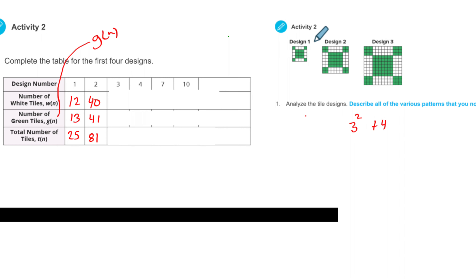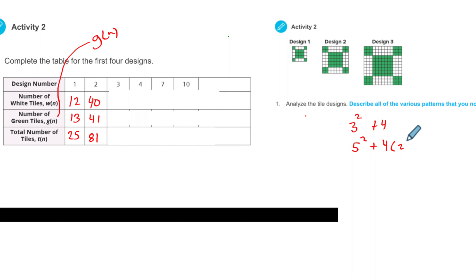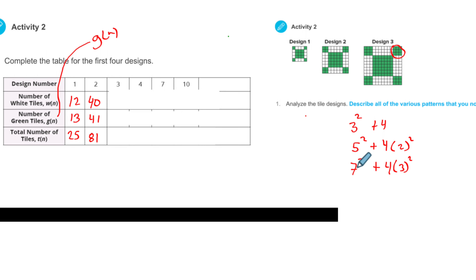Now I go to the next design looking for a pattern. From 3, it goes up to 5. So I have the center part which is 5 squared. Then I add these corner pieces — there are 4 of them, and in design number 2 they are 2 by 2, so it's 4 times 2 squared. Design 3: 7 squared plus 4 times 3 squared. What do you think design 4 would be? The pattern is 3, 5, 7 — so the next one's 9. It's going to be 9 squared plus 4 times 4 squared.